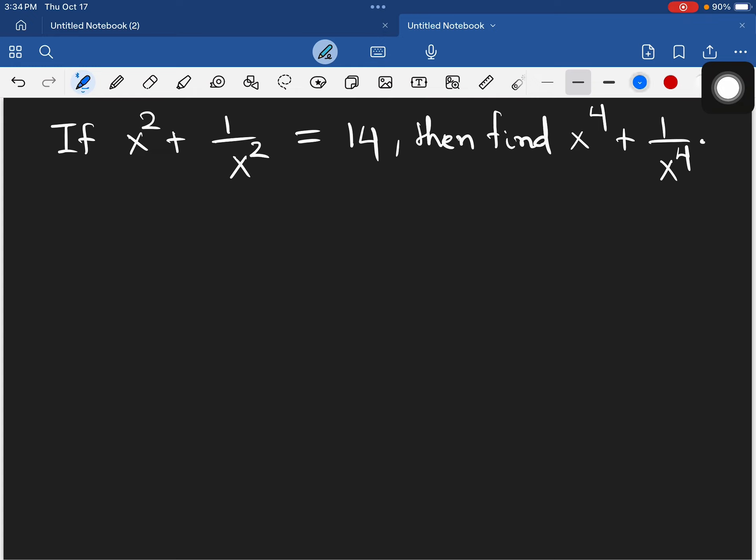Now, x power 2 plus 1 over x power 2 is equal to 14.